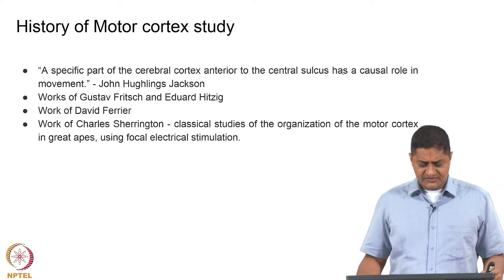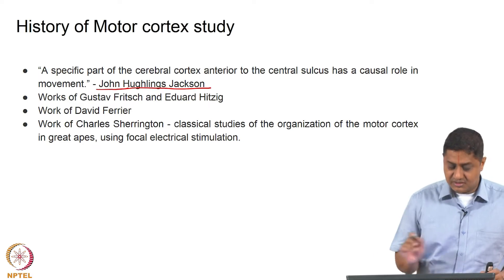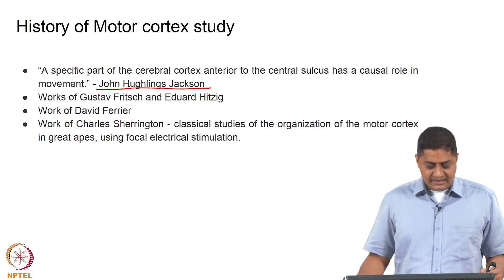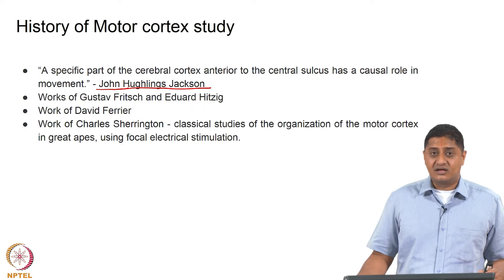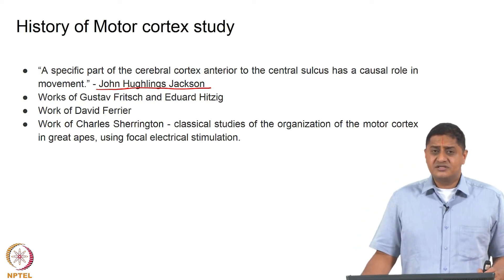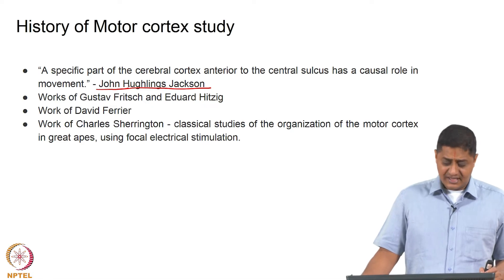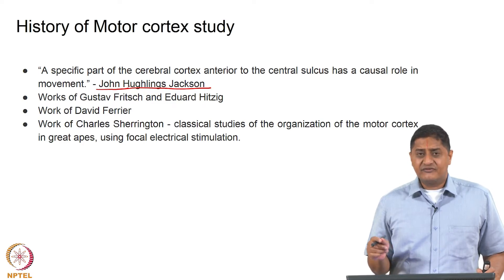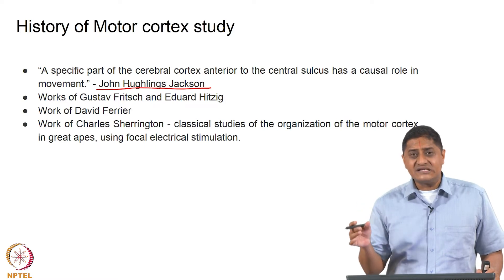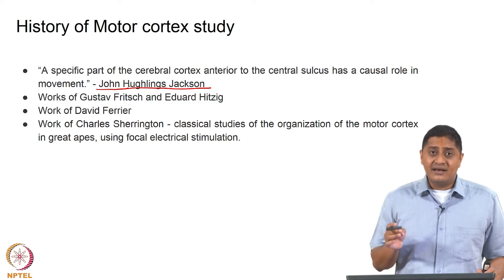The first claim towards this was made by the English neurologist Hughlings Jackson. He suggested that a specific part of the cerebral cortex anterior to the central sulcus has a causal role in movement. Hughlings Jackson was a neurologist who examined many patients with epilepsy, and from his observations he found that movements proceeded from one part of the body to another as if arranged in a temporal sequence, and each particular component resembled a natural movement.